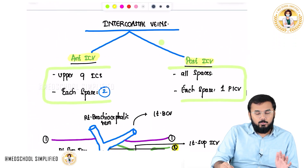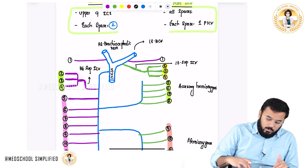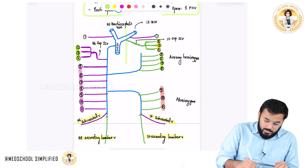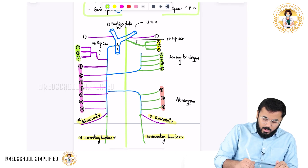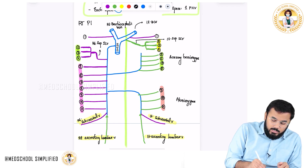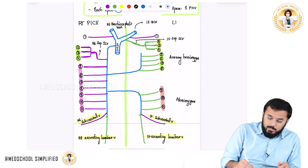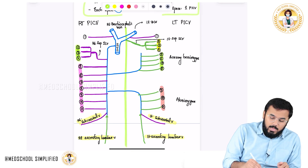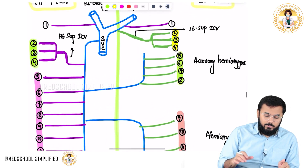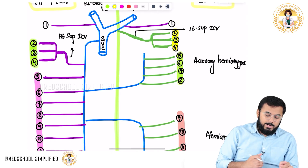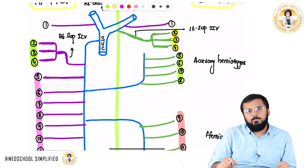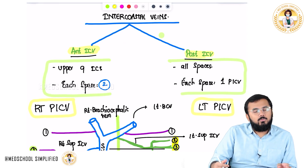One final important point: if you divide the entire picture into two halves, the right half represents the right posterior intercostal vein system and the left half represents the left posterior intercostal vein system. All veins on the right side are called right posterior intercostal veins, and all on the left side are called left posterior intercostal veins. That is everything you need to know regarding the intercostal veins. Thank you for watching.